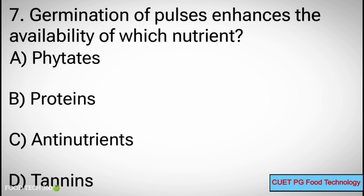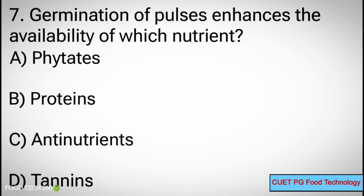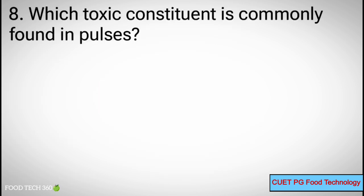Question number 7: Germination of pulses enhances the availability of which nutrient? Options: A. Phytates, B. Proteins, C. Antinutrients, D. Tannins. Correct answer: B. Proteins.